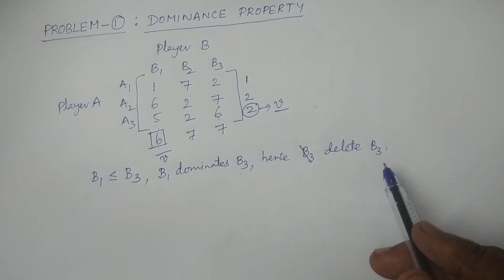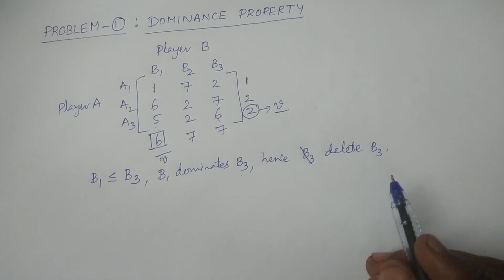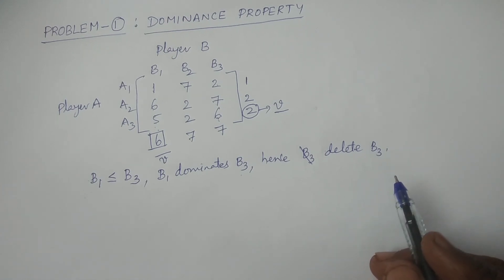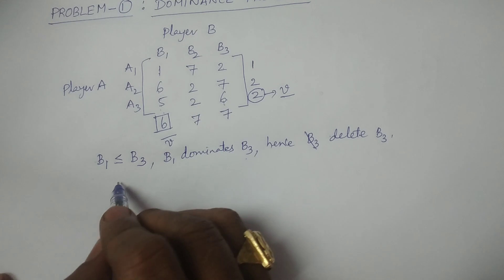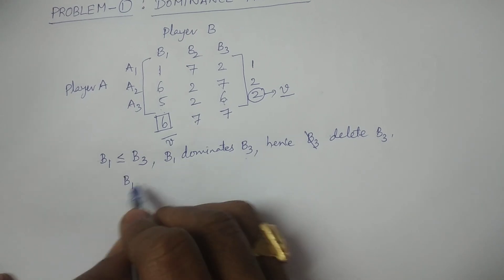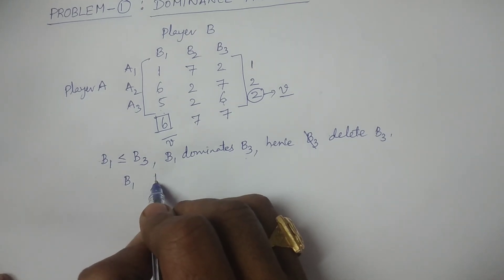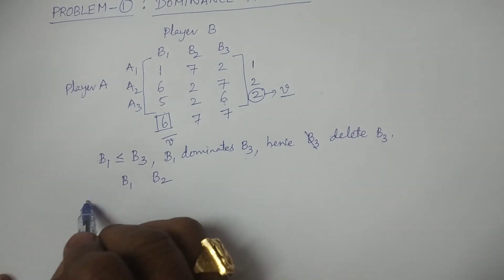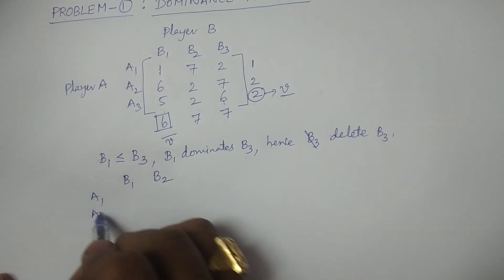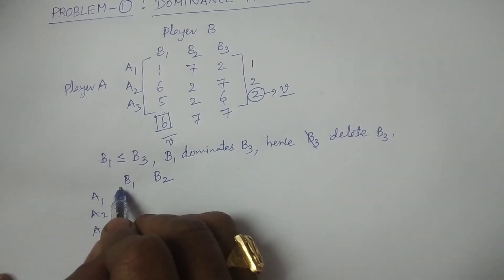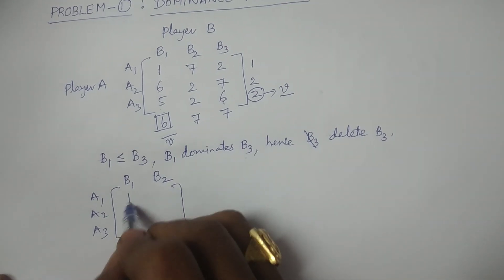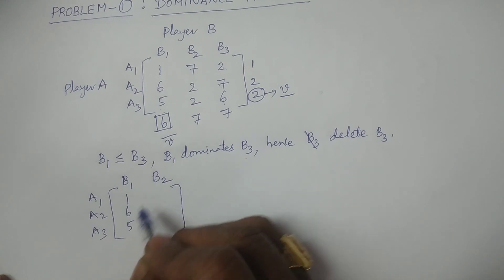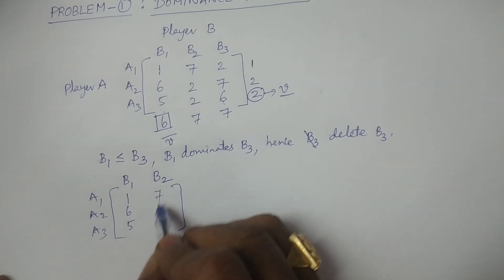By deleting B3, you write the remaining strategies as the reduced payoff matrix. The strategies remaining for player B are B1 and B2. Player A strategies remain as A1, A2, A3. The remaining values are: 1, 6, 5 for B1 and 7, 2, 2 for B2.